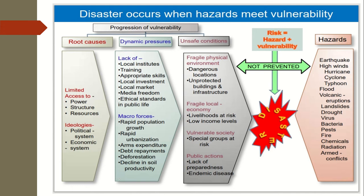Disaster occurs when hazards meet vulnerability. Risk is equal to hazard plus vulnerability. This is the progression of vulnerability — when hazardous conditions meet vulnerable communities and those conditions are not prevented, hazards lead to disaster.